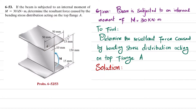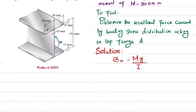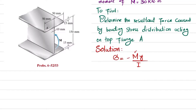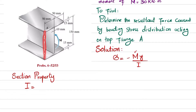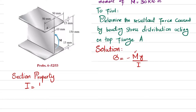The resultant force is caused by the bending stress distribution, so we'll first find the bending stress. We know that bending stress in general is equal to minus M times y divided by I. We have M, so we'll find I first as a section property. The moment of inertia for a rectangle is (1/12)bh³. The total breadth is 100 mm (0.1 m) and the height is 150 mm (0.150 m).